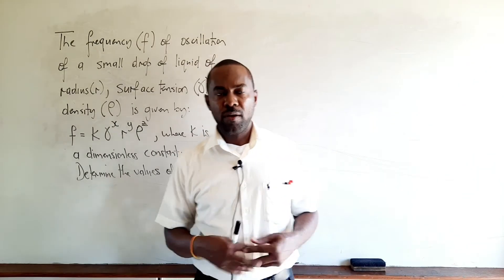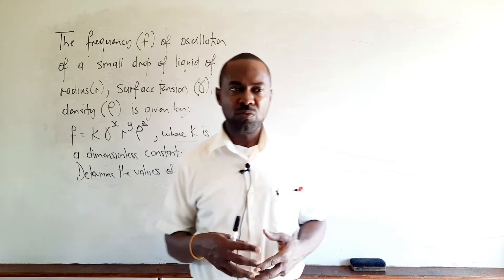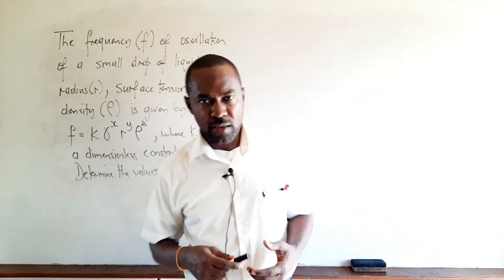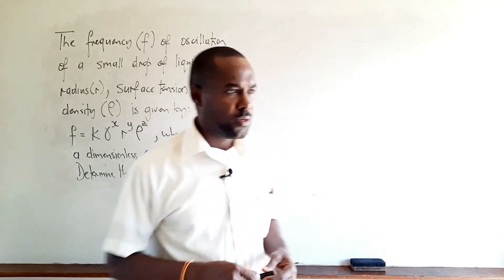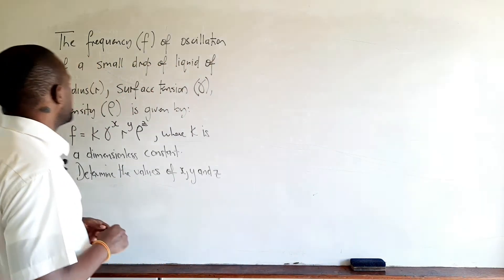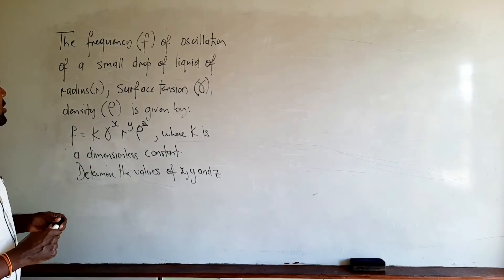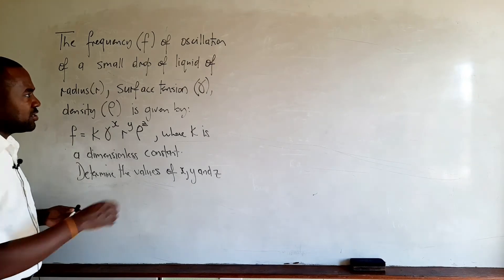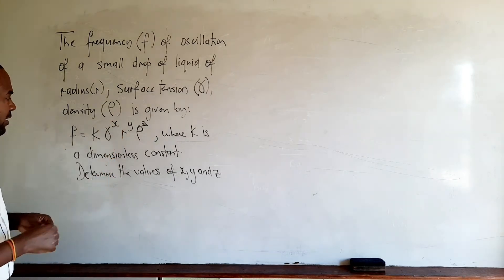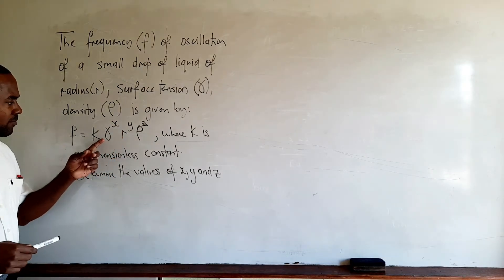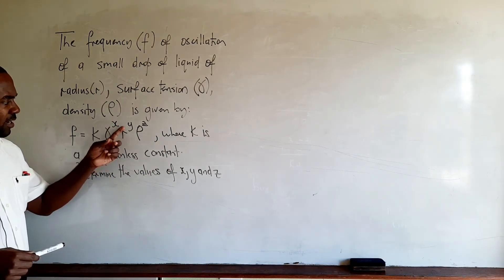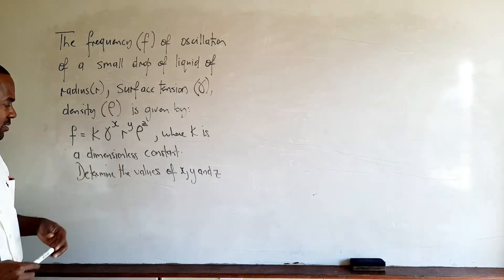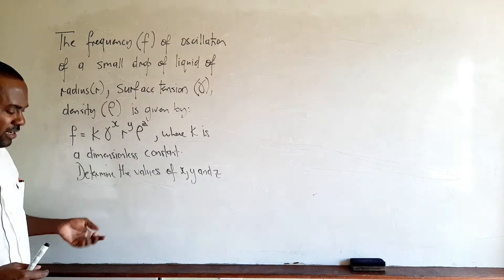In this video, we look at a question in which we will use the method of homogeneity to find the value of some unknown in an equation. The frequency f of oscillation of a small drop of liquid of radius r, surface tension gamma, density rho, is given by f equals k gamma to the power of x, r to the y, rho to the z, where k is a dimensionless constant. Determine the values of x, y, and z.